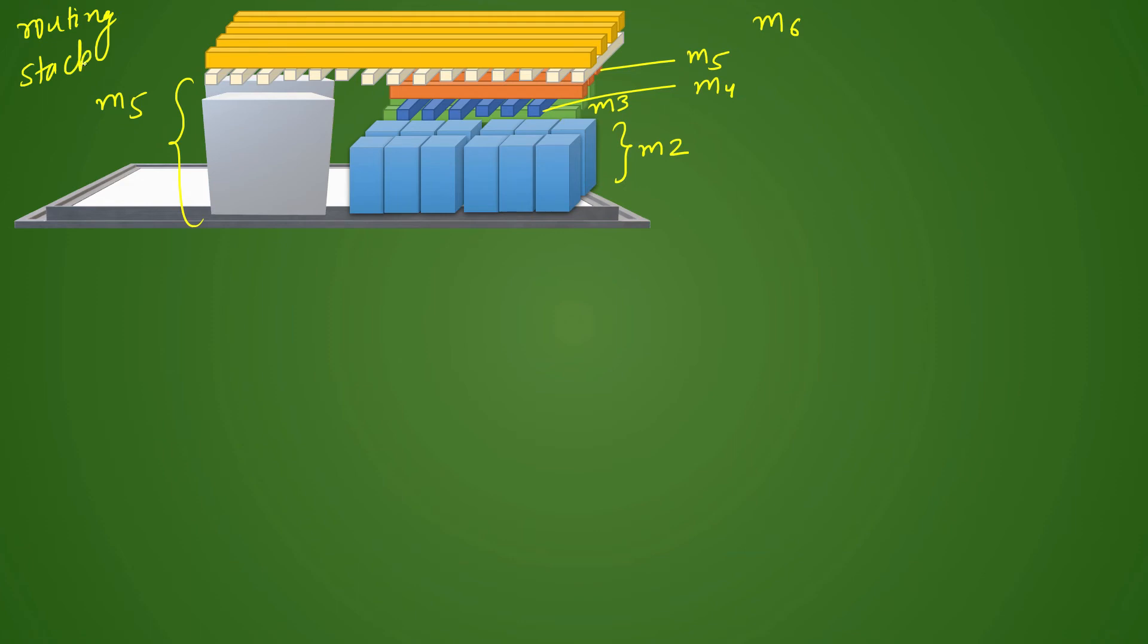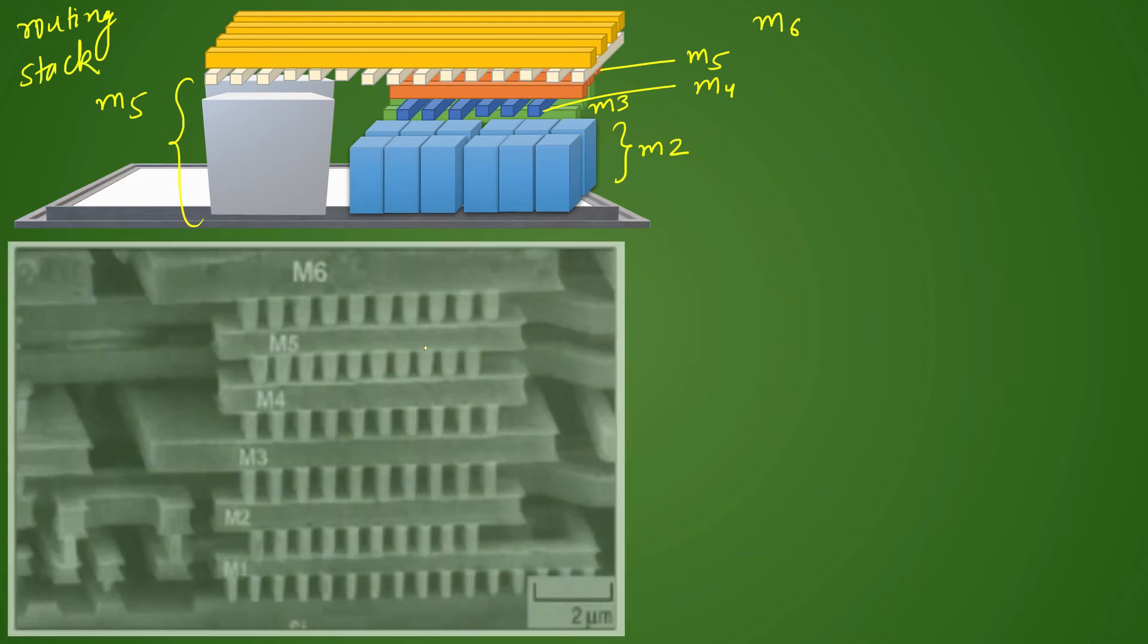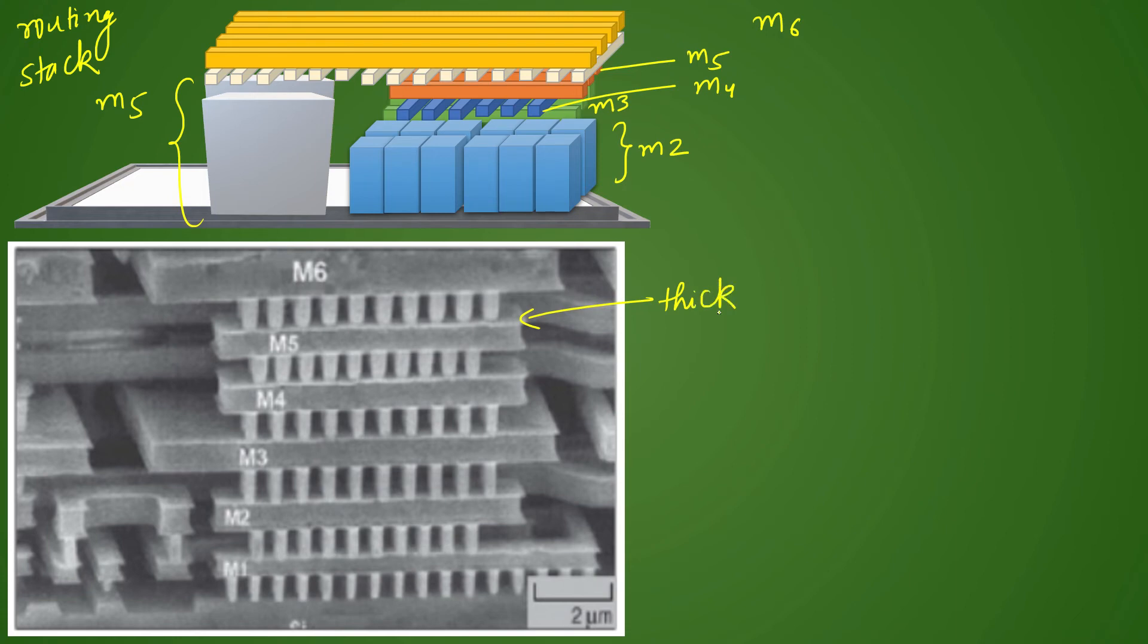The routing resources are planned like this. Here is a real picture of 2 micrometer scale of routing resources. You can see that they are stacked one on top of each other and if you see your routing resources which are in higher layer, they are thicker. This is more thick compared to the one which is below.